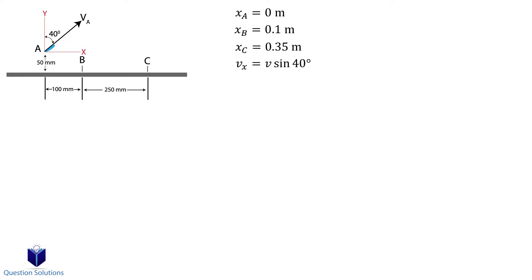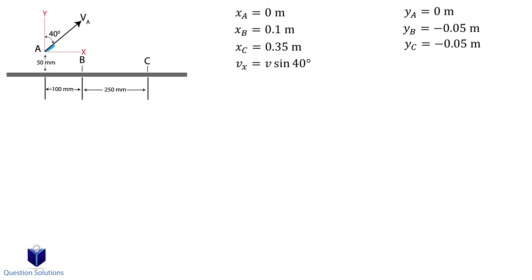For the vertical direction, we have the starting location at 0 meters. Point B is at negative 0.5 meters and point C is also at negative 0.5 meters. We put our coordinate system at point A, so you can see that points B and C are both below point A, which means our values will be negative. The velocity of the water in the vertical direction is V cos 40 degrees. Let's not forget gravity, which is negative 9.81 meters per second squared.